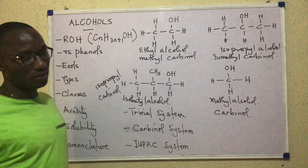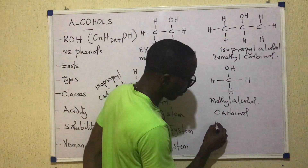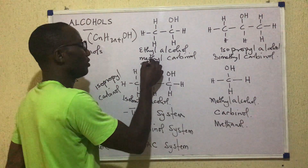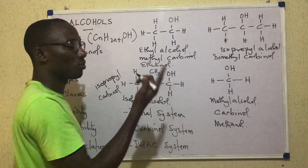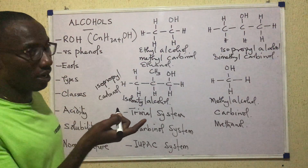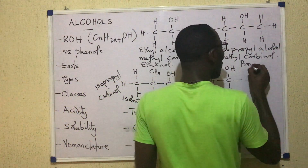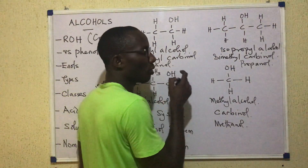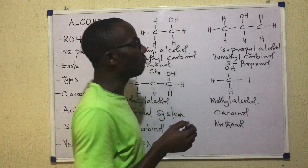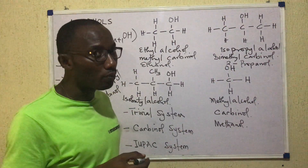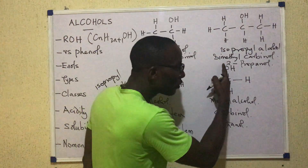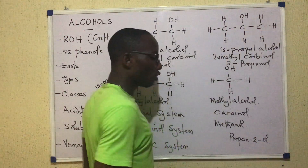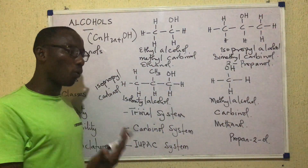Finally, by the IUPAC system — this compound is called methanol, and this one is called ethanol; one carbon, two carbons. For the three-carbon compound, I'd expect it to be called propanol, but the OH group is located on carbon-2, so it's called 2-propanol. If the OH were on carbon-1, it would be 1-propanol. Bear in mind that 2-propanol is the same as propan-2-ol, and 1-propanol is the same as propan-1-ol.